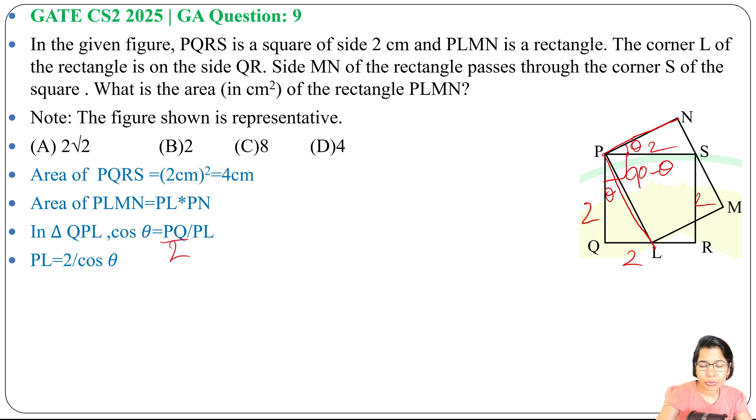So 2 divided by cos theta. We found PL equals 2 divided by cos theta. Now take this triangle PNS. In PNS, this is theta, right? So cos theta will be PN divided by PS.